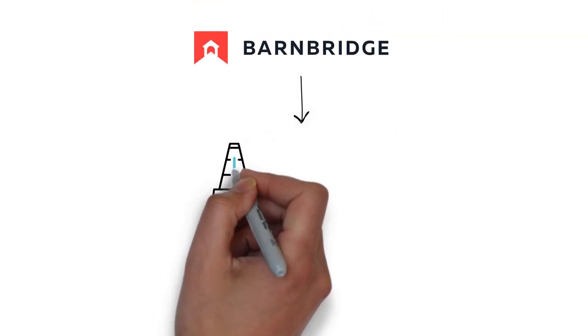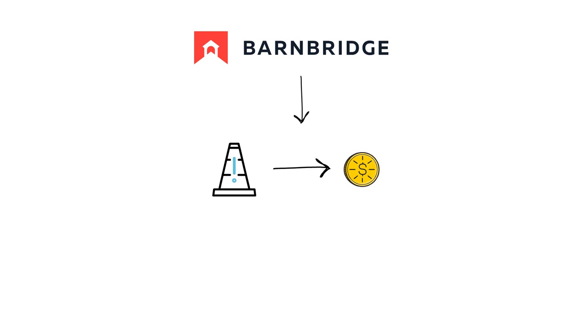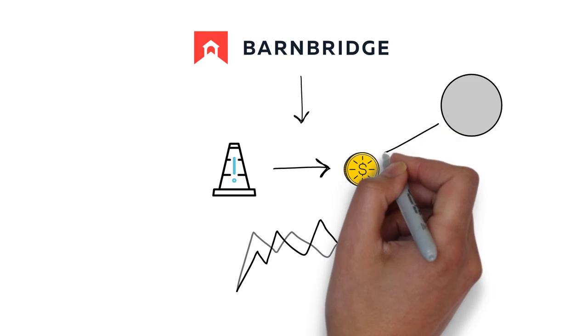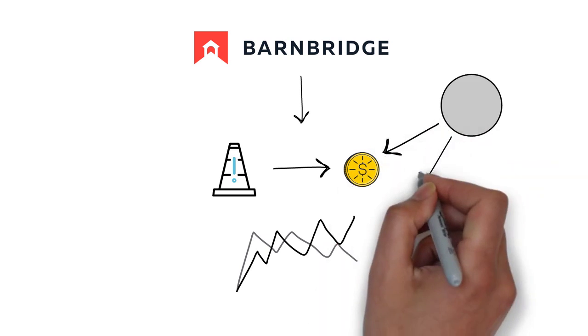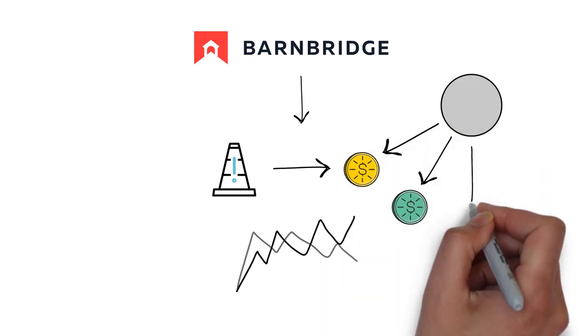BarnBridge is a risk tokenizing protocol that allows for hedging yield sensitivity and price volatility. This can be achieved by accessing debt pools of other DeFi protocols and transforming single pools into multiple assets with different risk return characteristics.